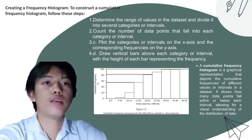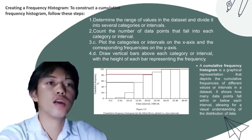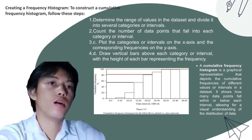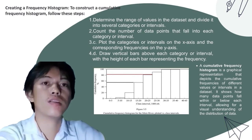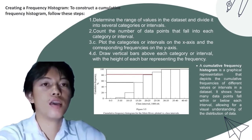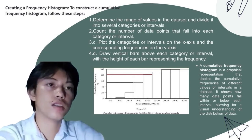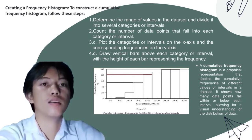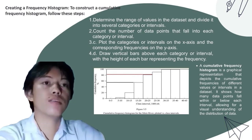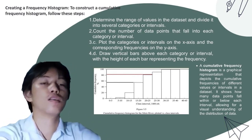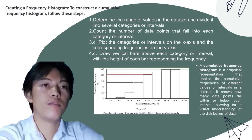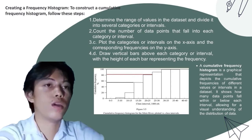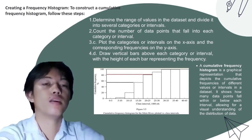To construct a frequency histogram: determine the range of values and divide into intervals; count data points in each interval; plot intervals on the x-axis and corresponding frequencies on the y-axis; draw vertical bars above each interval with height representing the frequency.